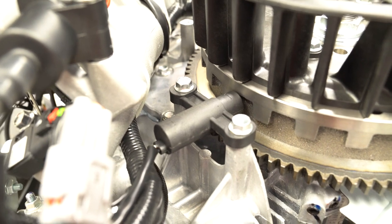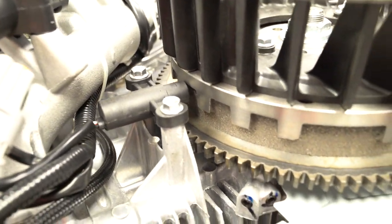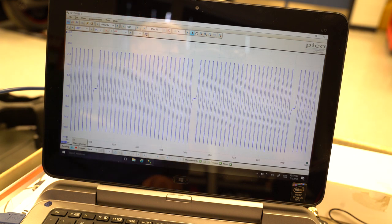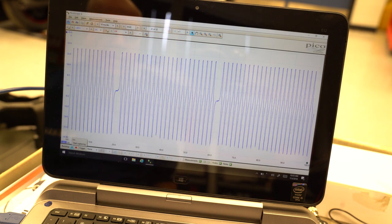A crankshaft position sensor mounted close to the flywheel produces AC voltage when the engine is running. The ECU monitors engine RPM and exact crankshaft position information from this AC waveform.